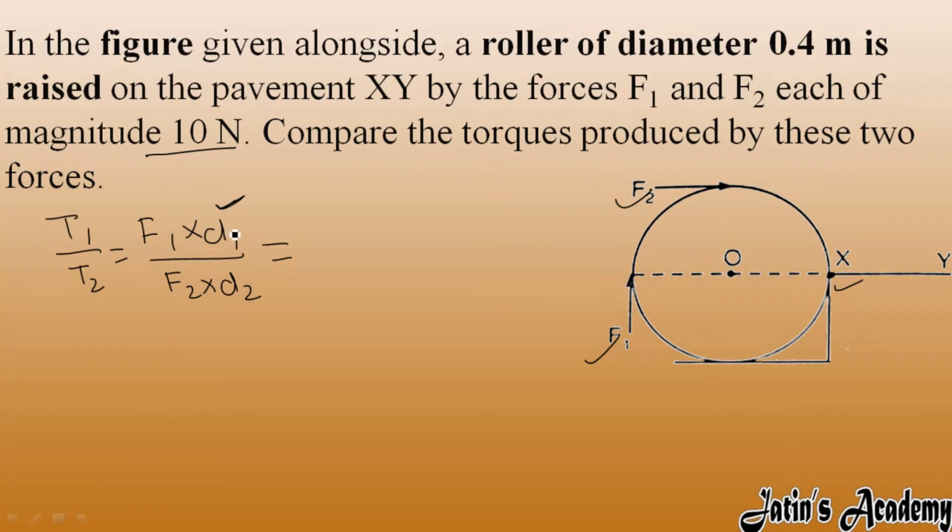That's why the definition of this perpendicular distance, again and again I was repeating in the lecture. We have to see first of all force one. This is force one and this is the line of action of force. This is the fixed point. The line of action of force and the fixed point - this is the perpendicular distance d1. d1 value is the diameter of the circle, so d1 is 0.4. Force is 10 newton and perpendicular distance equals diameter, that is 0.4.